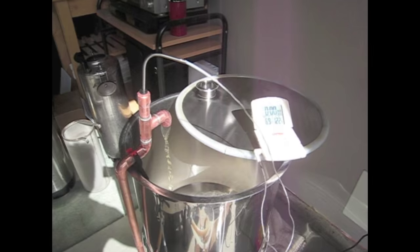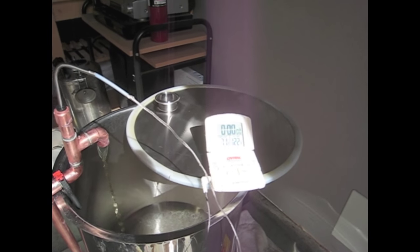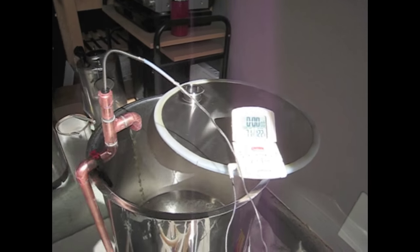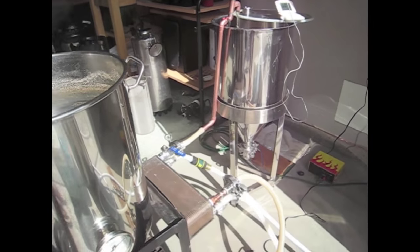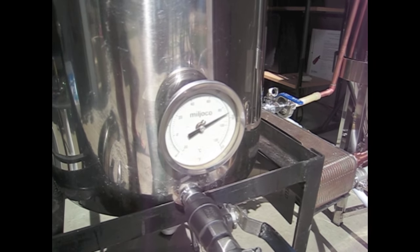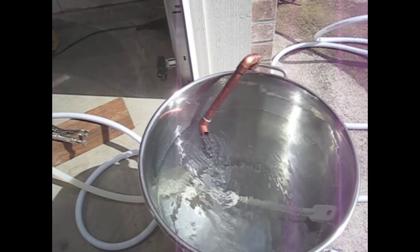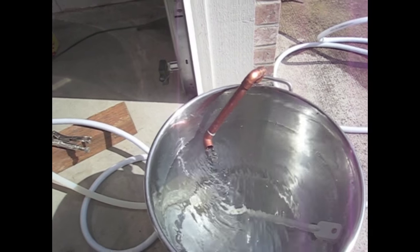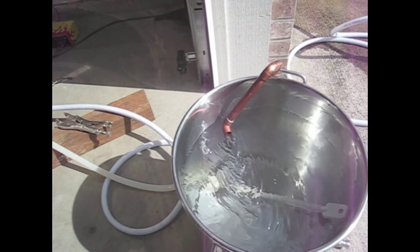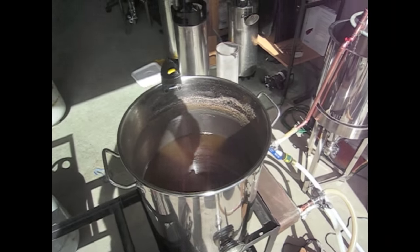So here we are running. You can see the flow rate coming out. We're at 69 degrees. 71 now. That's from the kettle. This is at 192. And this is our flow rate of the cooling water. So great results. Very quickly. Single pass.